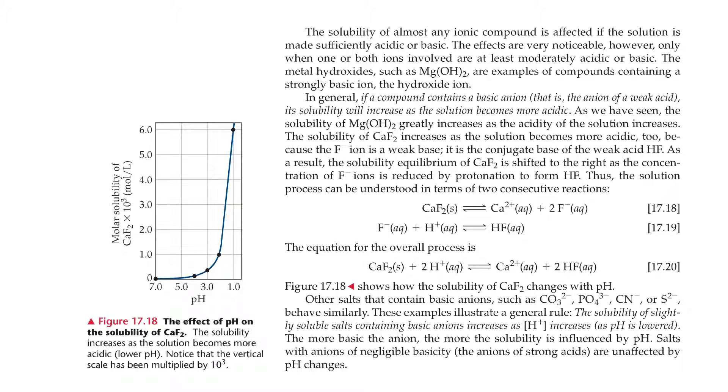The solubility of almost any ionic compound is affected if the solution is made sufficiently acidic or basic. The effects are very noticeable, however, only when one or both ions involved are at least moderately acidic or basic. The metal hydroxides, such as magnesium hydroxide, are examples of compounds containing a strongly basic ion, the hydroxide ion. In general, if a compound contains a basic anion, that is, an anion of a weak acid, its solubility will increase as the solution becomes more acidic.